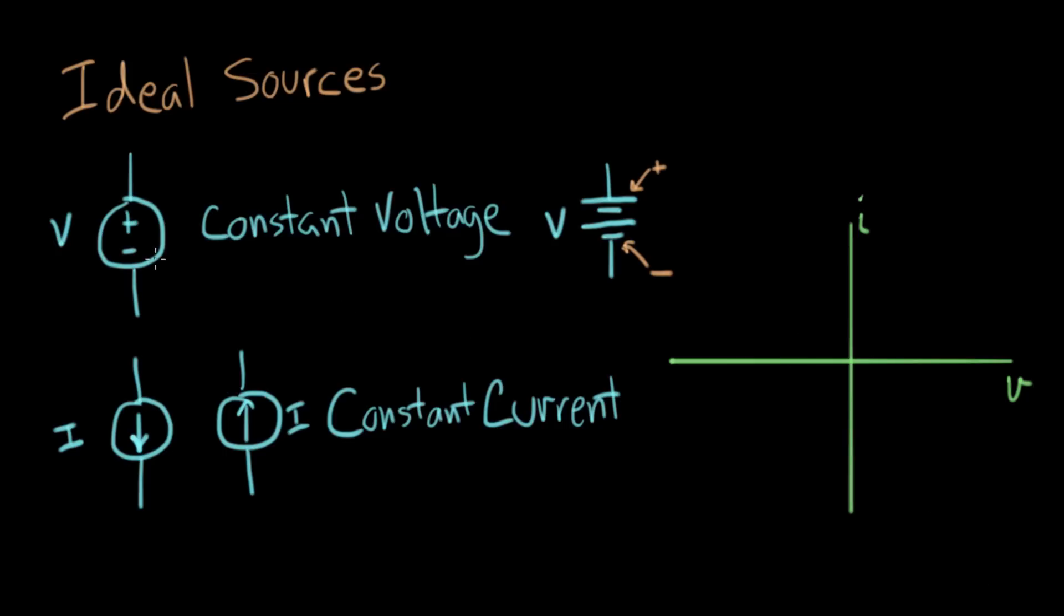For a constant voltage source, the voltage doesn't change. The current goes up and down depending on what the rest of the circuit demands, but the voltage is the same everywhere. This is the I-V plot of a constant voltage, where V equals some constant.